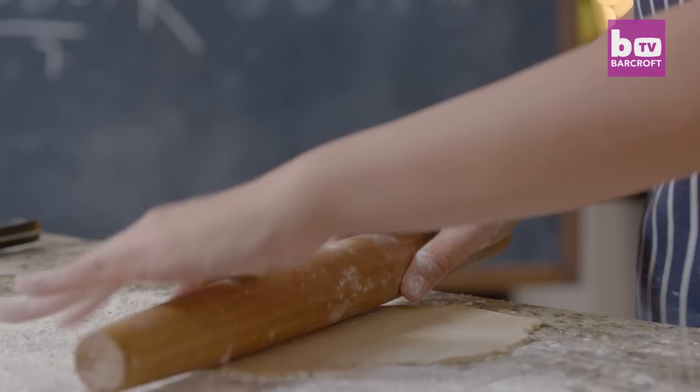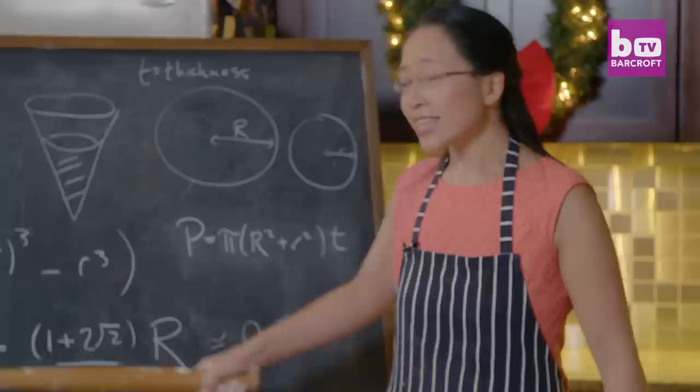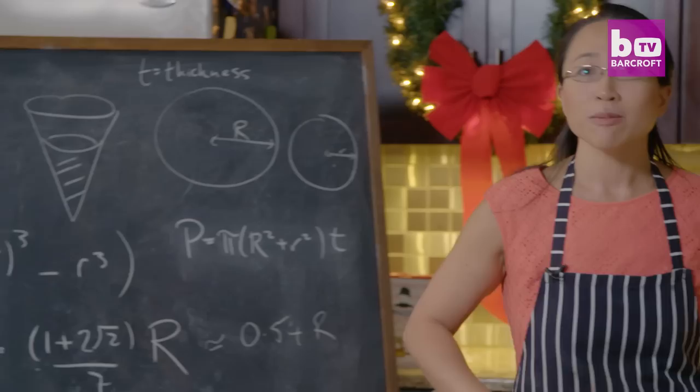Now we can choose how thick our pastry is going to be. And if we look at this formula, because the thickness is on the bottom of the fraction, if the thickness is bigger, then the answer is going to be smaller. And I want my ratio of mince to be big, so I'm going to make my pastry thin.